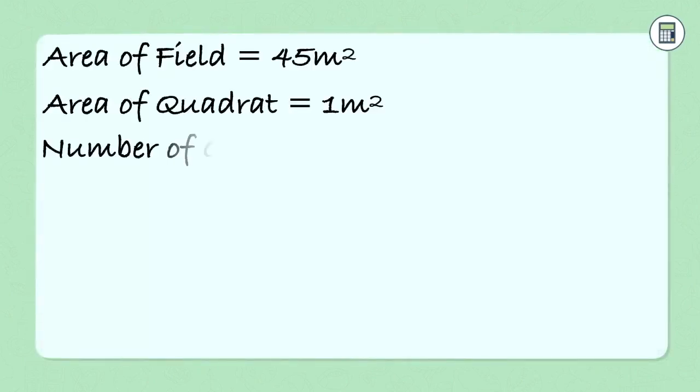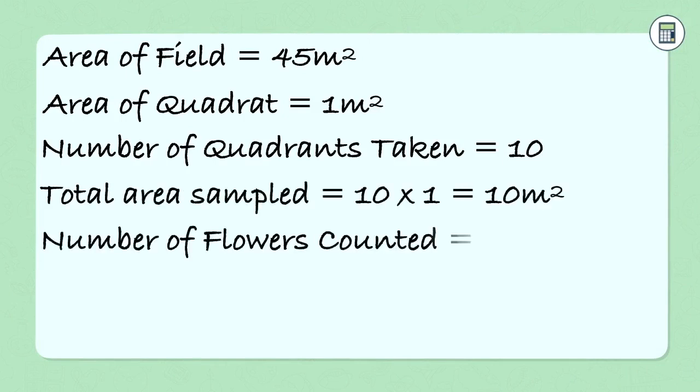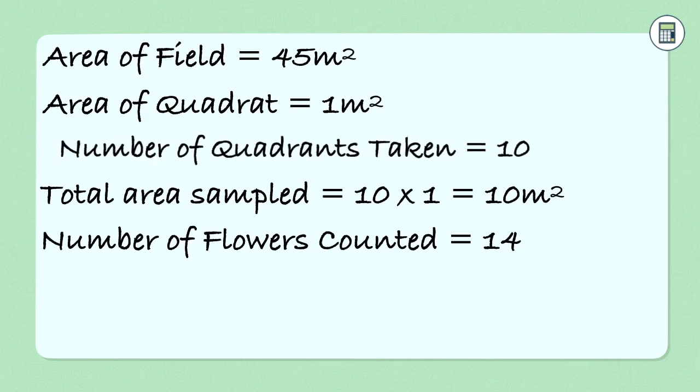Ok so now we will do our calculation. The area of the field is 45 meters squared. The area of our quadrat was 1 meters squared and we took 10 quadrats. If we took 10 quadrats and each quadrat is 1 meter squared then we sampled a total area of 10 meters squared. There were 14 flowers in 10 meters squared. There were 14 flowers in 10 meters squared and we can use this information to work out how many flowers there were in a typical 1 meter squared.